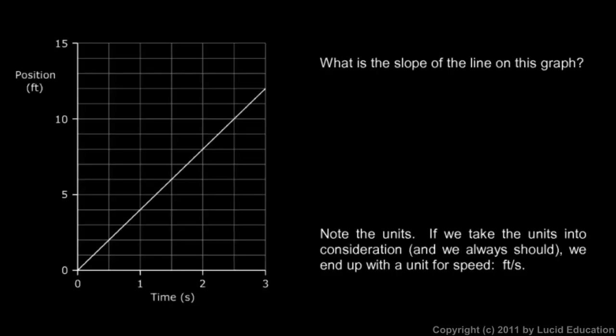So let's look at the motion we were thinking about in an earlier example. This was the case where the car was moving along at four feet per second, so it ends up moving a total of 12 feet in three seconds. And now we're asked, what is the slope of the line on this graph? That's this line right here. We want to calculate the slope.